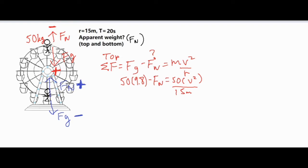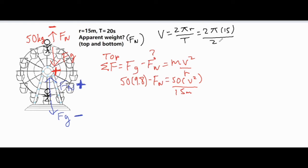Since we don't have velocity, we use the formula v = 2πr/T, which is the circular motion version of distance over time. The distance is 2πr — the circumference — and T is the period. So v = 2π × 15 ÷ 20, which gives us a velocity of 4.71 meters per second.